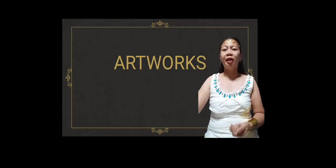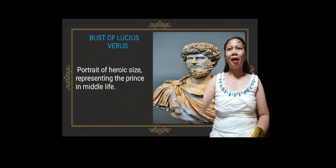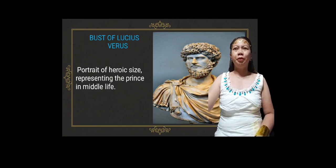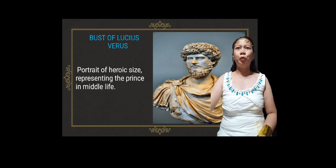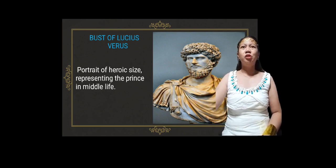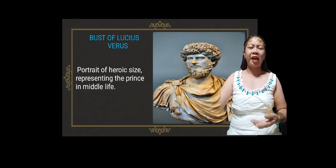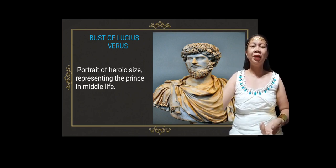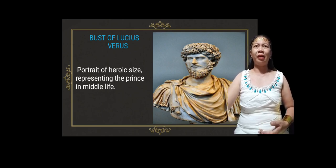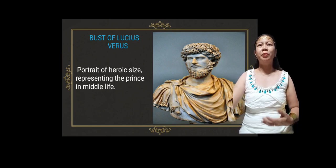Artworks of Roman art — first is the Bust of Lucius Verus. The Bust of Lucius Verus is a portrait in heroic style representing the prince in middle life. The smoothness of his face contrasts with the swirls of his hair rendered with a drill, giving a suggestive chiaroscuro effect to the work. The sculpture shows an increased volume of hair, indicating a desire of the emperor to be portrayed with splendor.